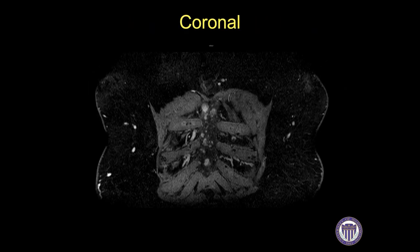I then look at the coronal and sagittal sequences, evaluating the internal mammary lymph node chains, axillary lymph nodes, sternum, and bones. Unfortunately, in one case, a woman had multiple metastases to her sternum, which were clearly seen on the coronal images.